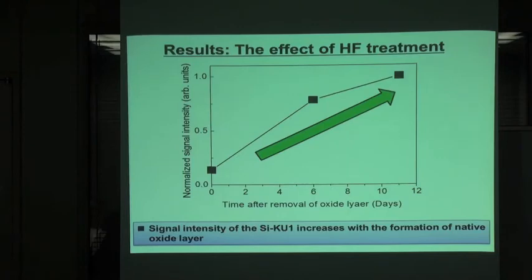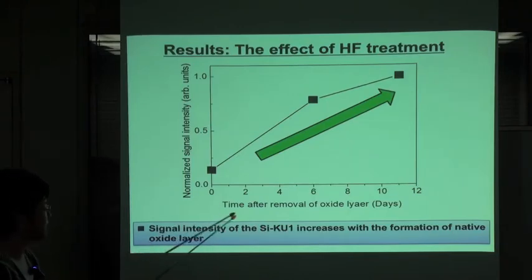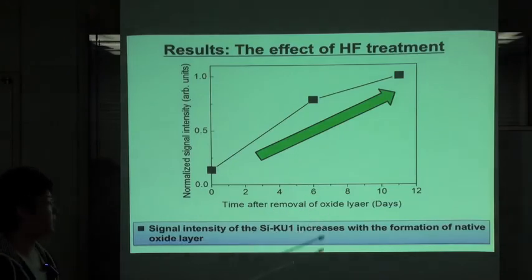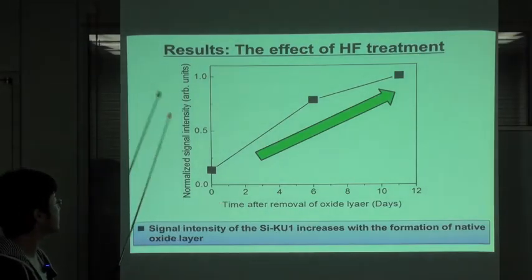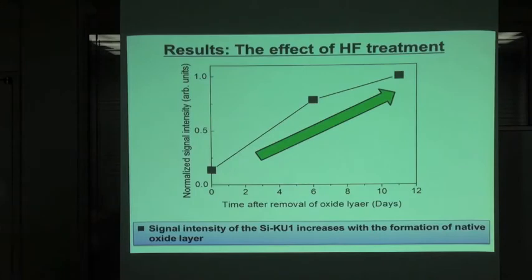This page shows the effect of the HF treatment. Horizontal axis is the time after the removal of the oxide layer, and vertical axis is the normalized signal intensity. From this graph, the signal intensity of KU1 increases with the formation of the native oxide layer.